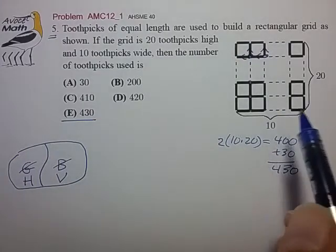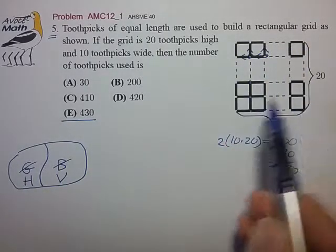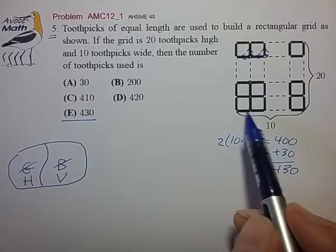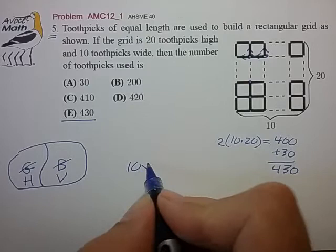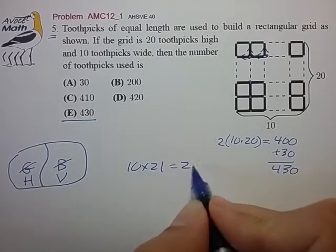So in the case of the horizontal toothpicks, we notice that we have a grid of 10 toothpicks by 21 rows, so that's 10 by 21, which equals 210.